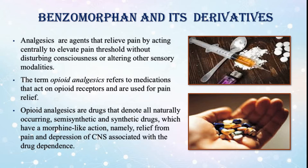Benzomorphan and its derivatives. Analgesics are agents that relieve pain by acting centrally to elevate pain threshold without disturbing consciousness or altering other sensory modalities. The term opioid analgesics refers to medications that act on opioid receptors and are used for pain relief. Opioid analgesics are drugs that denote all naturally occurring, semisynthetic and synthetic drugs which have a morphine-like action, namely relief from pain and depression of CNS associated with drug dependence.